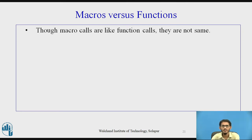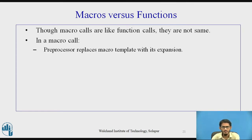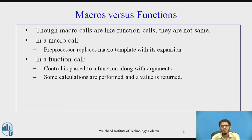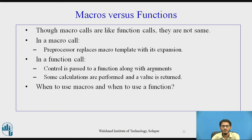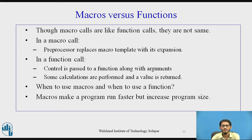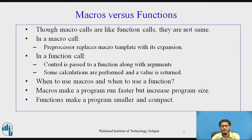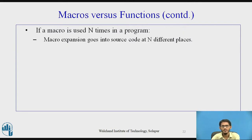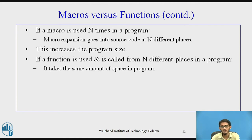Now let us compare macros and functions. Macro calls are like function calls but they are not the same. In a macro call, the preprocessor replaces the template with its expansion. In a function call, control is passed to the function with arguments, appropriate operations are performed, and a value is returned. If a macro is used n times, its expansion goes into the source code at n different places, increasing program size. If a function is called from n places, it takes the same amount of space.